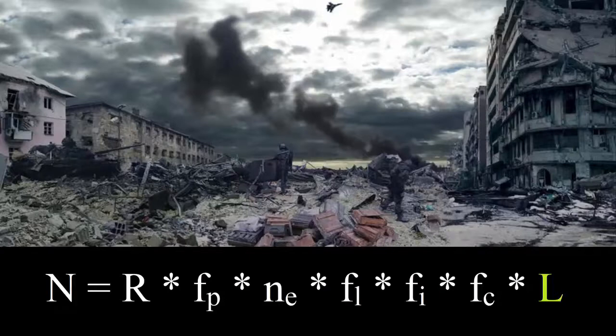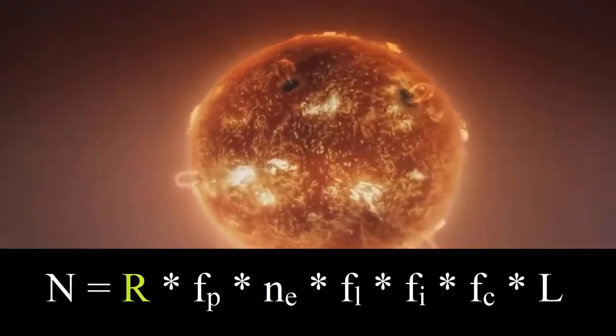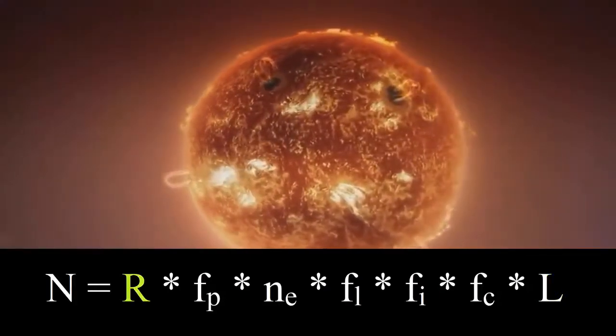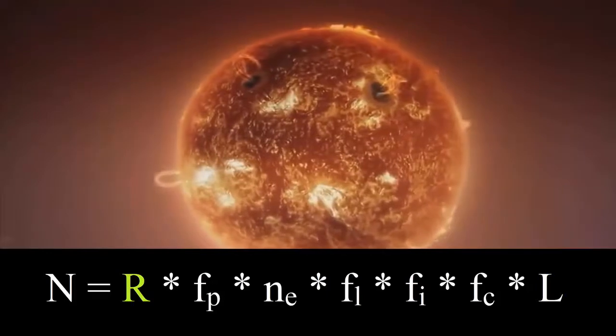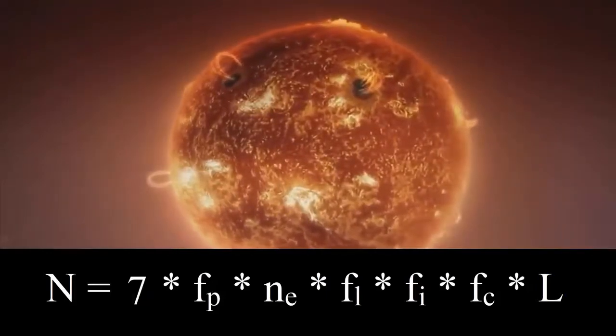The first number we need to come up with is R, yearly star formation in the Milky Way. This is one of the only numbers in this equation we know, and that number is 7 according to NASA's best estimates.